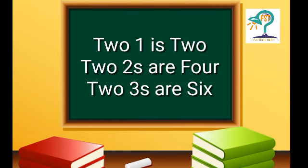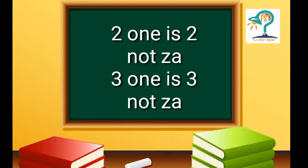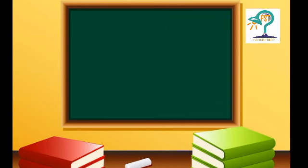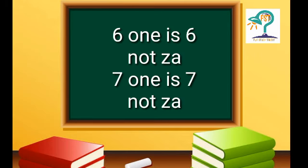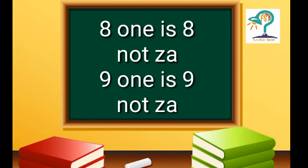I was making that mistake and nobody even corrected me. In fact, today many of you also say tables that way without thinking about what 'two ones are two' really means. So please correct it. The proper way is: two one is two, two twos are four, three fours are twelve, four sixes are twenty-four.